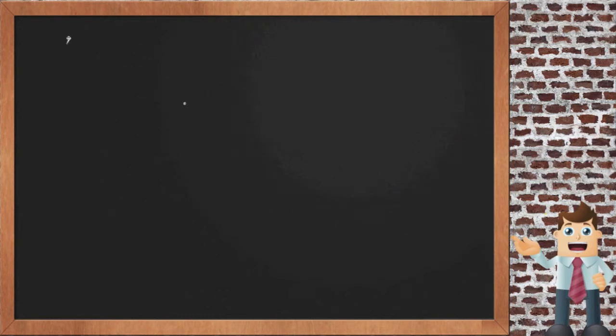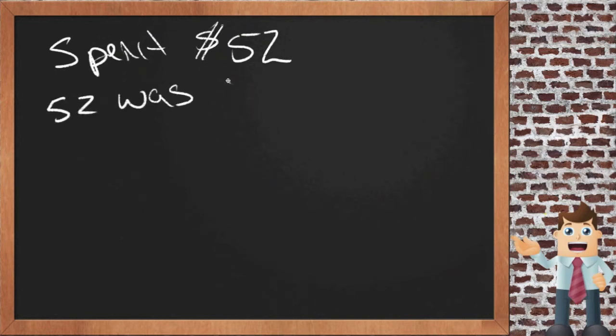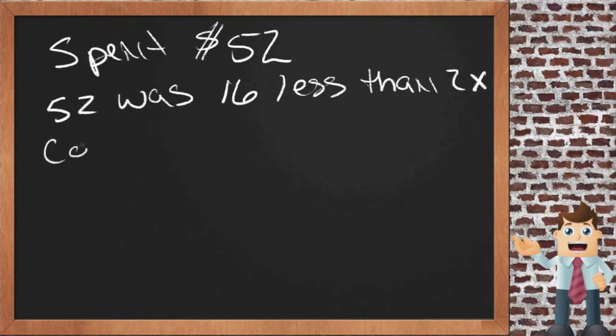So it says that you spent $52 for books. Spent $52. And that was $16 less than twice what you spent for a backpack. So the $52 was $16 less than 2 times the cost of the backpack.